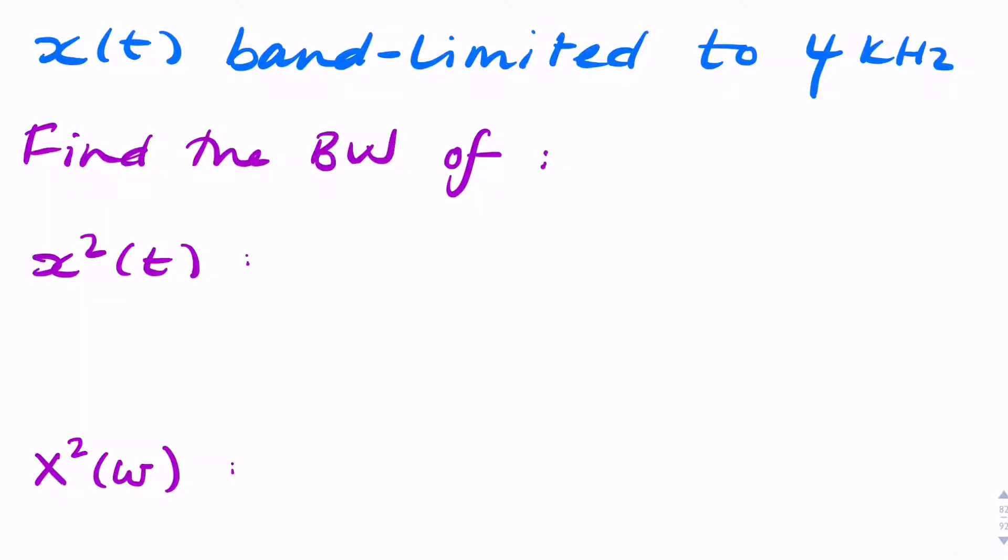In this question, we're given some signal x(t), and the only thing we're told about it is that it is band-limited to 4 kHz, so it's limited in frequency between plus and minus 4 kHz. It doesn't matter what the shape of the spectrum is.